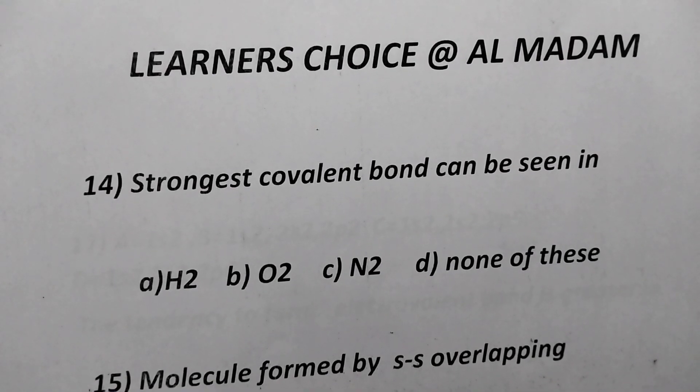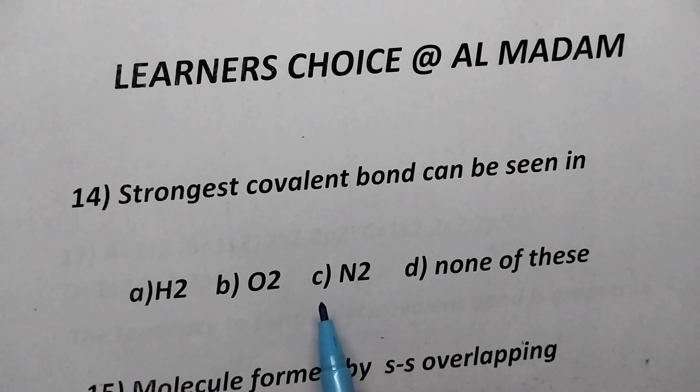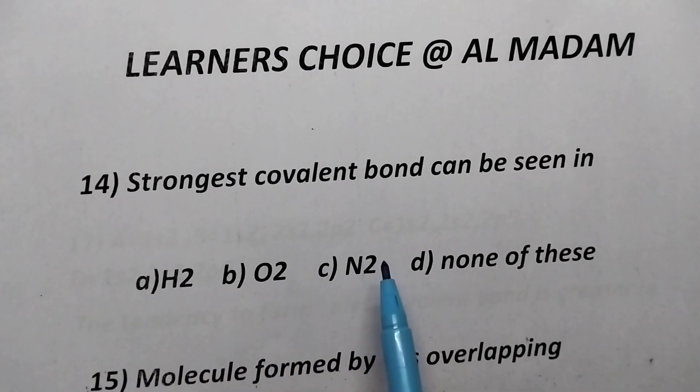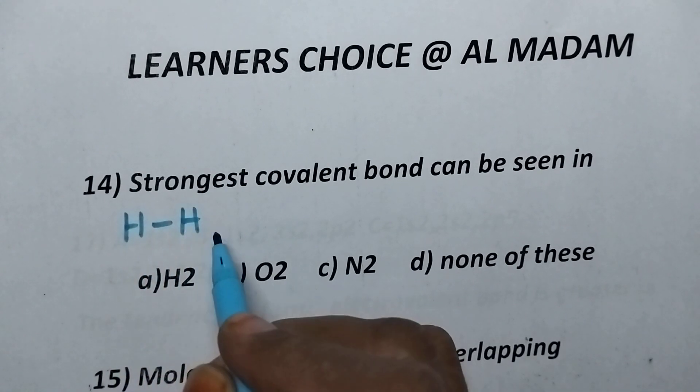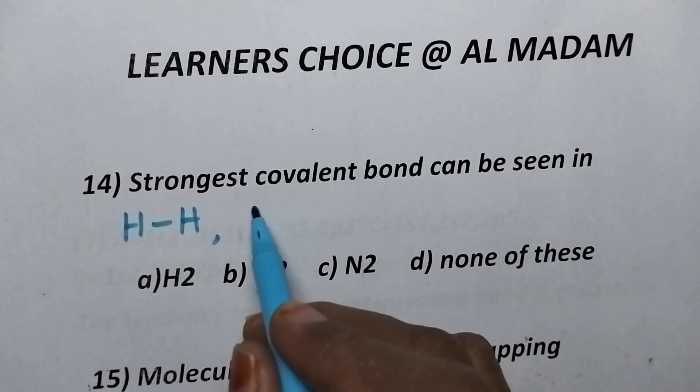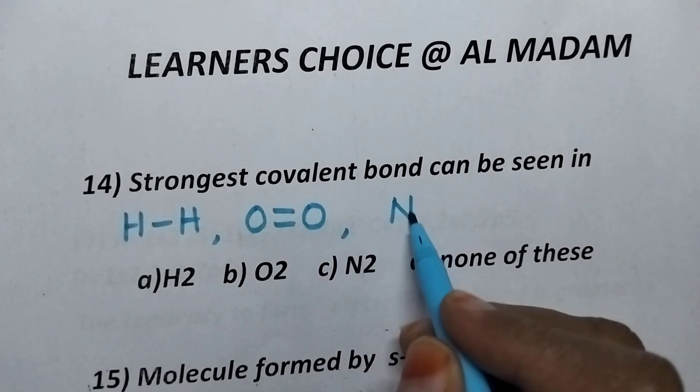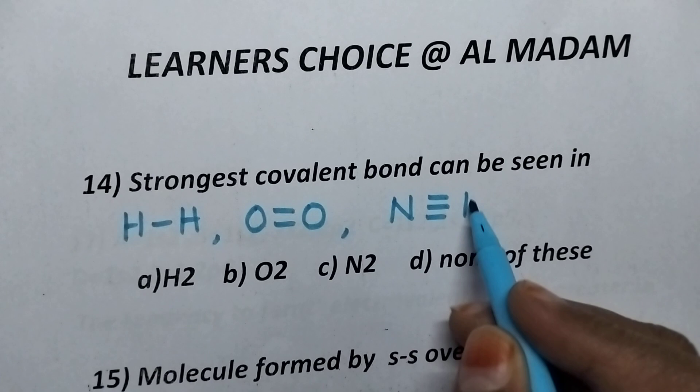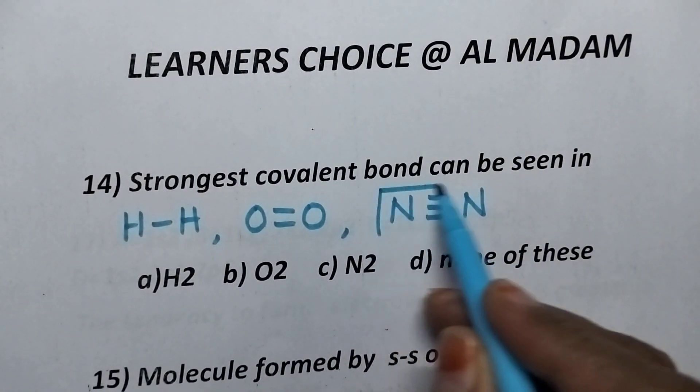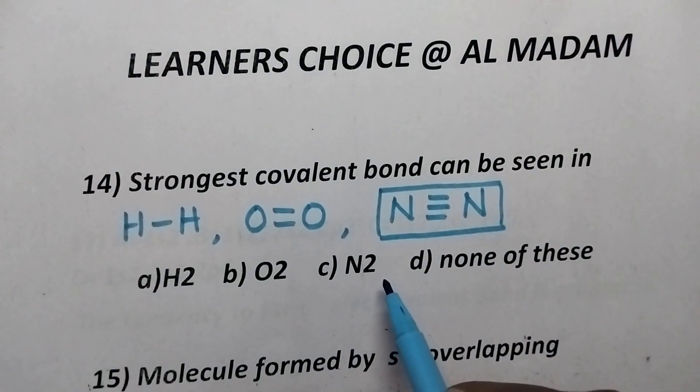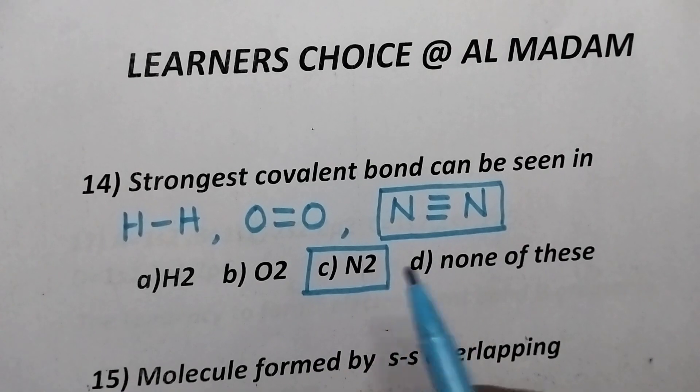The strongest covalent bond can be seen in. So, coming to the structures of hydrogen, oxygen and nitrogen. In hydrogen molecule, single bond is present. Coming to the oxygen, double bond is present. And coming to the nitrogen, triple bond is present between the 2 nitrogen atoms. With the result, nitrogen having triple bond forms the strongest covalent bond and hence option C is the right answer.